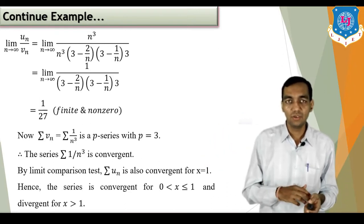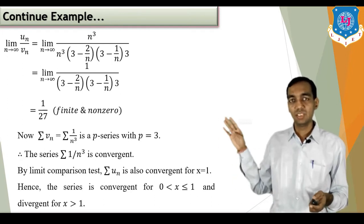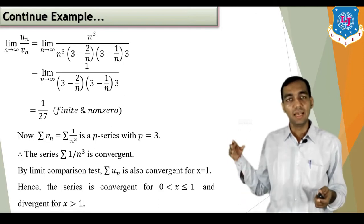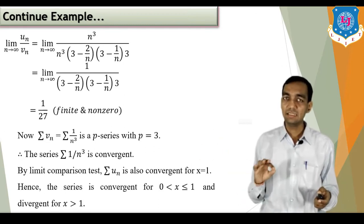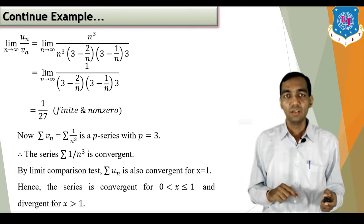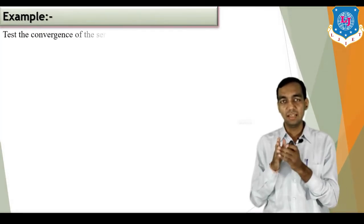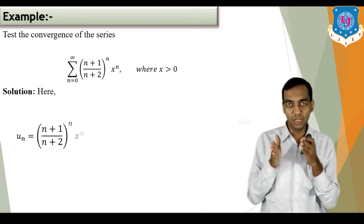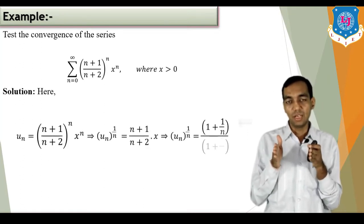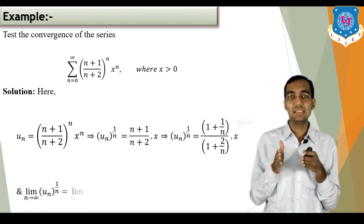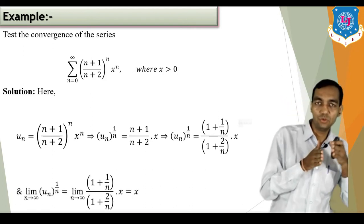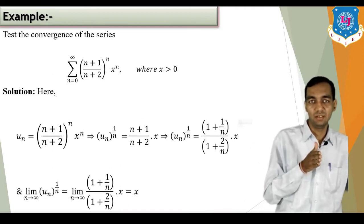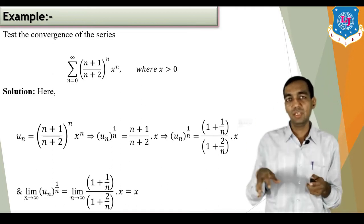So the complete condition is: for 0 < x ≤ 1 the series is convergent, and for x > 1 the series is divergent. From 0 to 1 (1 included) the series converges, and for any value greater than 1 the series is divergent.